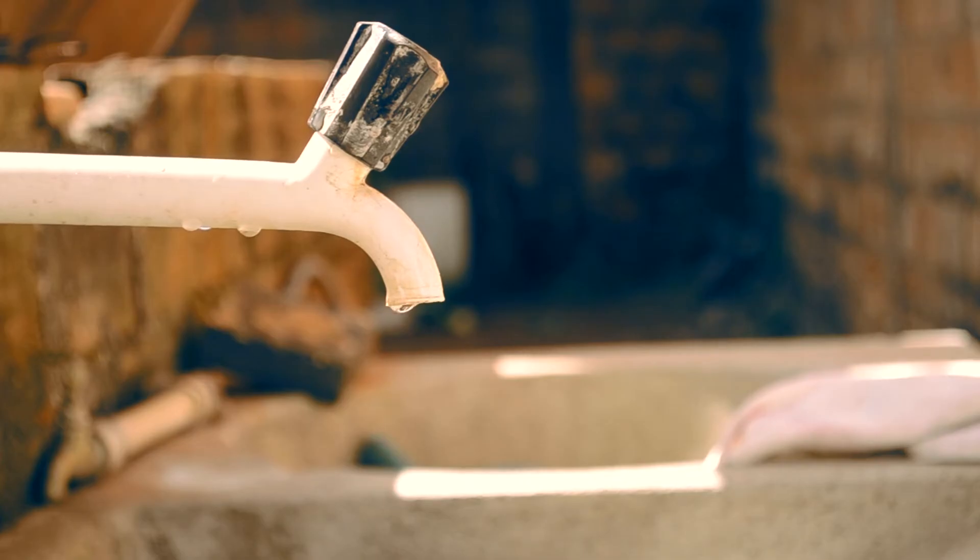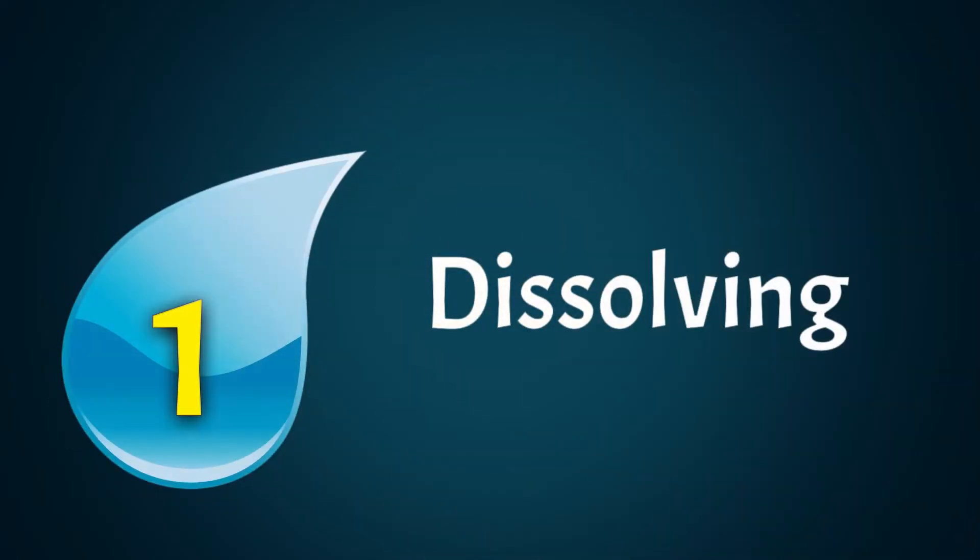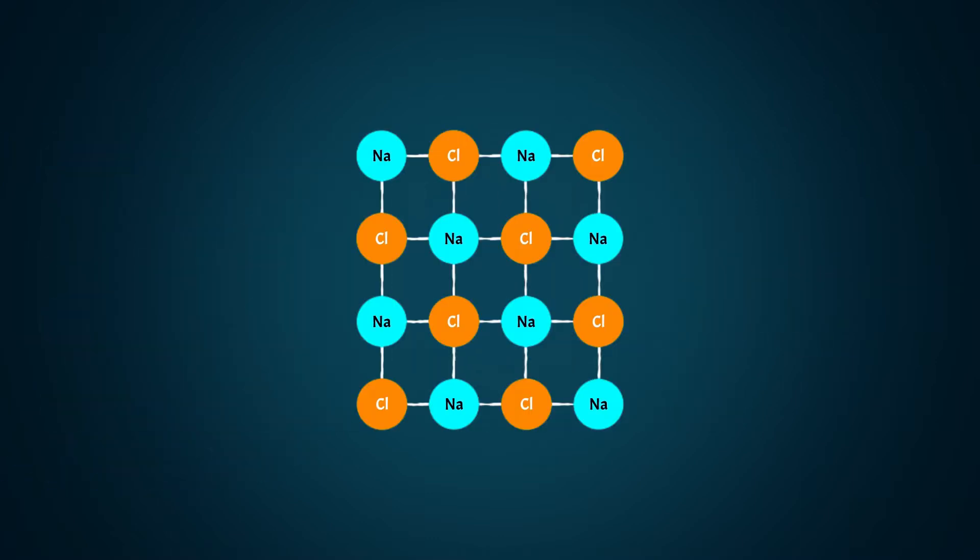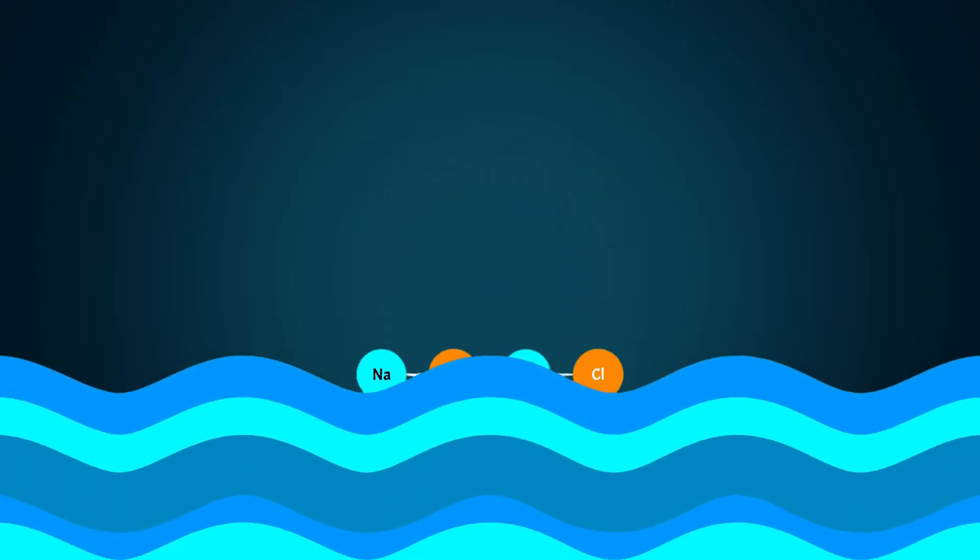The polar nature of water is really important for living organisms for a few reasons. First, water allows lots of things to dissolve in it. If we take regular table salt, sodium chloride, as an example and drop it into water,